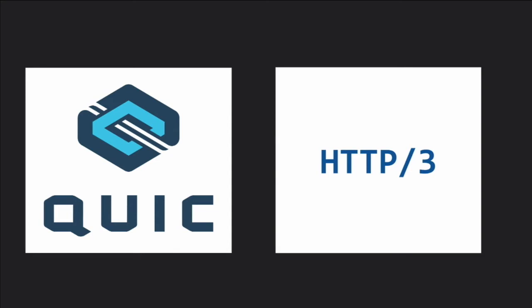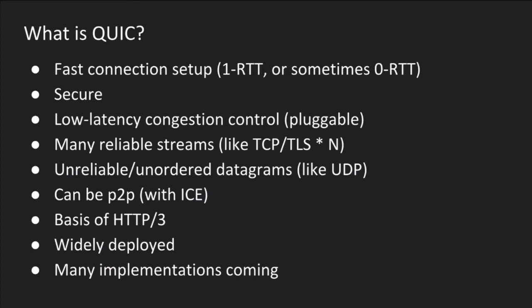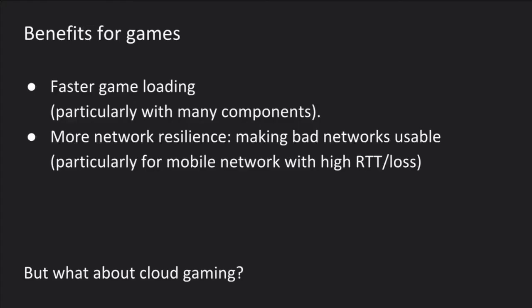If you're not familiar with HTTP/3 and QUIC, you should look into it — it's great stuff. QUIC allows for fast connection setup, it's secure, it has pluggable congestion control for low latency, it allows many reliable streams unlike TCP, and it also gives you unreliable or unordered datagrams. It can be peer-to-peer with ICE, like the WebRTC data channel. It's the basis for HTTP/3, which means over time it will naturally roll into the stacks you're using on your servers and clients. It's already widely deployed and proven in production, with many implementations coming as IETF standardization completes.